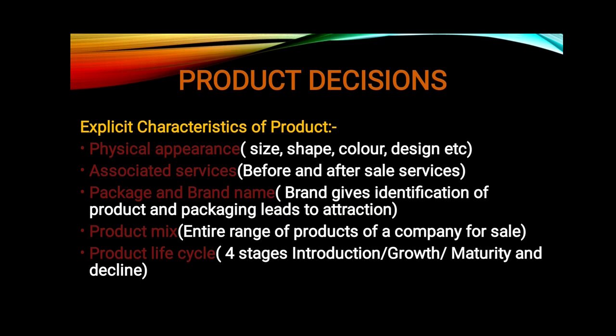When we take product decisions, there are some explicit characteristics that affect product decisions. First, we talk about physical appearance. In physical appearance, we talk about the size of the product, how is the shape, how is the color, how is the design. We focus on these things because our customers are attracted by them when they purchase any product from the market.